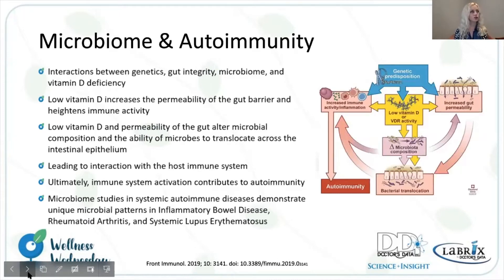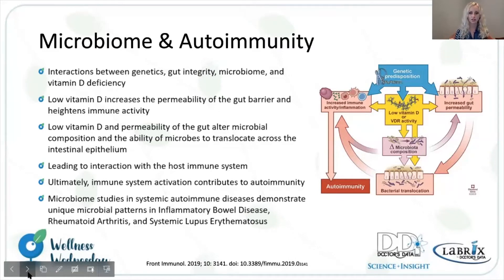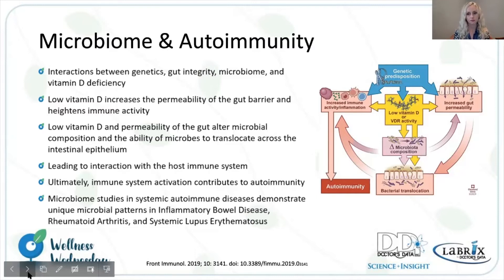With regards to intestinal permeability, a key consideration is autoimmunity. Vitamin D is very important with regards to intestinal permeability. When patients have low vitamin D, that is associated with intestinal permeability and potentially associated with autoimmunity. So there is a connection with vitamin D, intestinal permeability, and autoimmunity — also with IBD, rheumatoid arthritis, and lupus. Vitamin D is very important for autoimmunity, but also for the gut and the intestines themselves with regards to permeability.